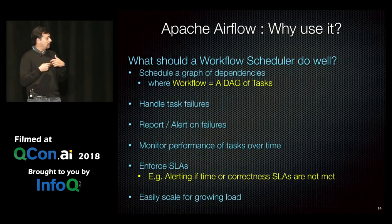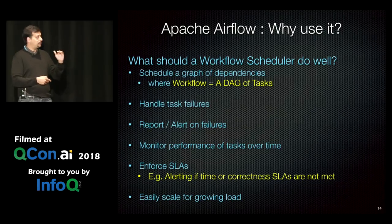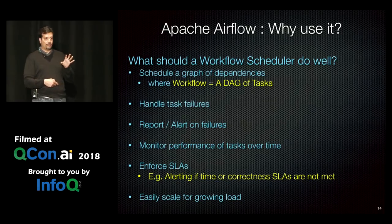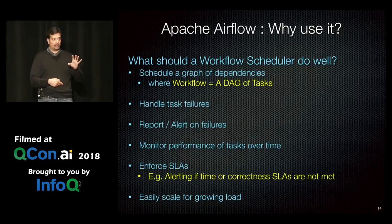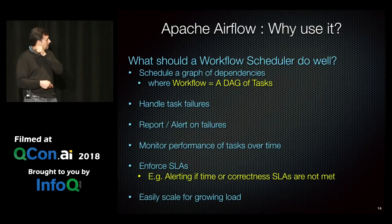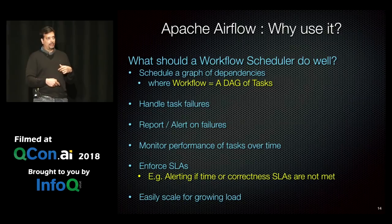What should a workflow scheduler do for you — what are the table stakes? It should schedule a graph of dependencies so that if upstream dependencies succeed, downstream runs. It should retry on intermittent failures and report and alert on any type of failure, integrating with your existing monitoring and alerting. It should give you built-in performance over time and enforce SLA alerting, because if an hourly job is taking three hours to run, you're probably going to get paged.